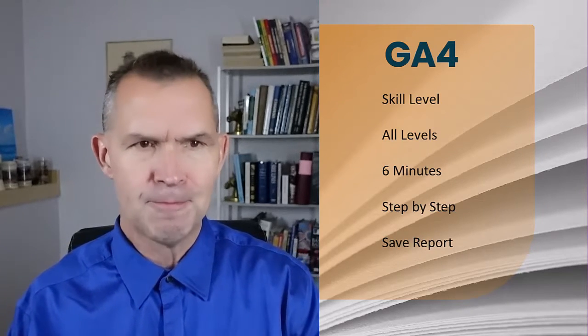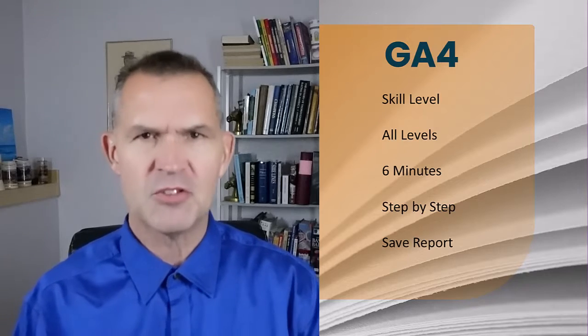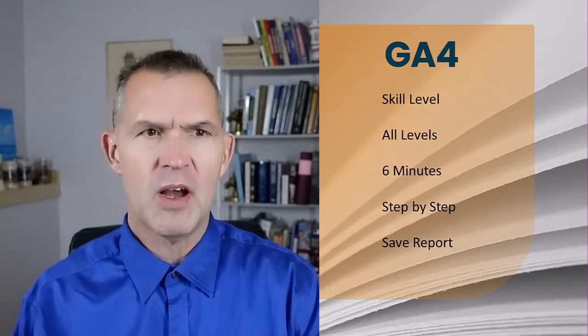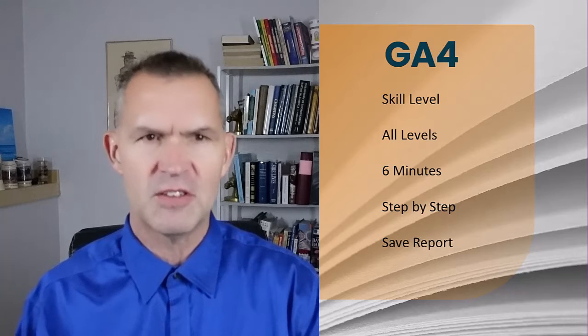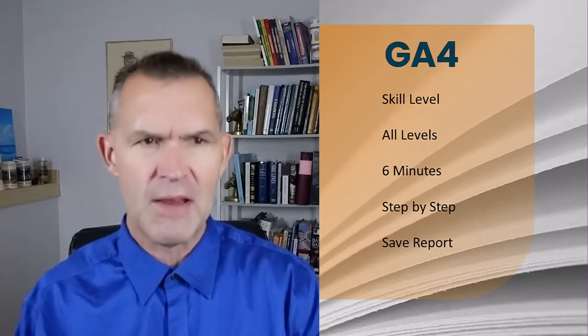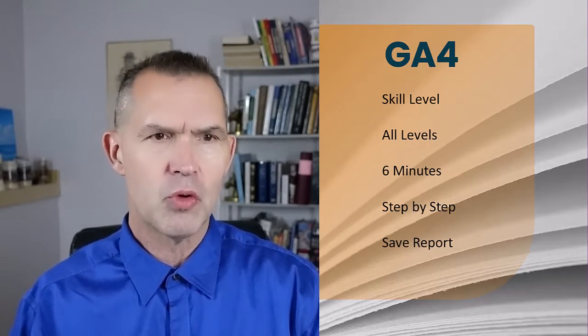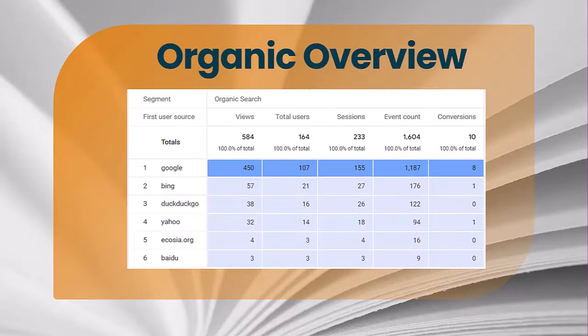The organic overview shows you which search engines are bringing your traffic. In this example, you're looking at traffic from Google, Bing, DuckDuckGo, Yahoo, and Baidu, along with your views, total users, sessions, event count, and conversions.